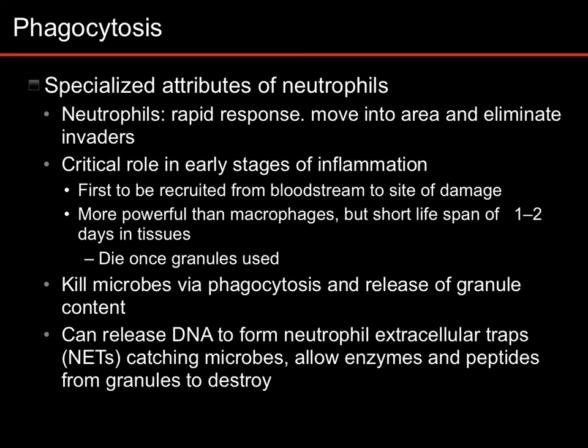The other main phagocyte is neutrophils. Neutrophils are not sentinel cells — they don't have toll-like receptors. They mostly bind to opsonins, like C3B or antibodies or things like that. They're very quick to be recruited to a site of damage.